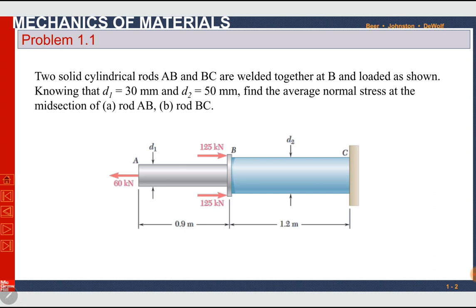The problem states: two solid cylindrical rods AB and BC are welded together at point B and loaded as shown. At point B two different cylinders have been welded. D1, the diameter of the first cylinder, is 30 mm and D2, the diameter of the other cylinder, is 50 mm. Find the average normal stress at the mid-section of rod AB and rod BC.